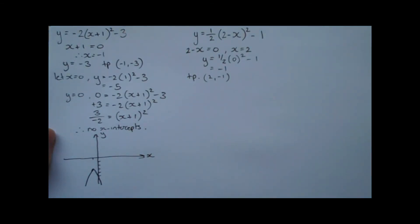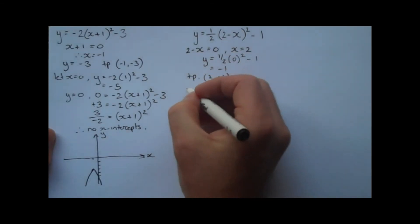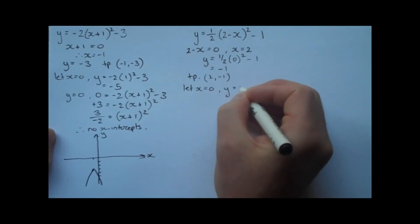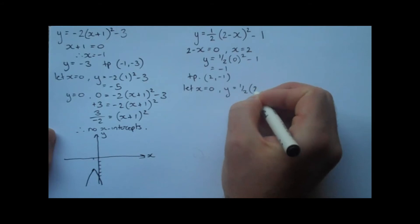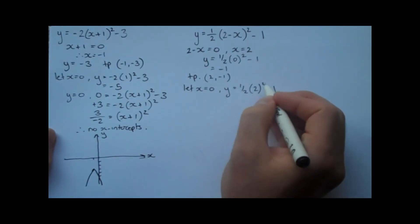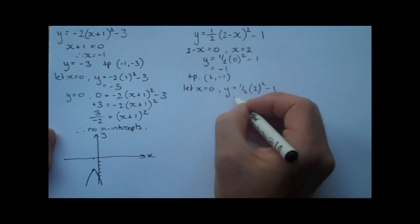So I suppose now we'd like to find the intercepts. So first of all, we will find the y-intercepts. So let x equal zero. If we let x equal zero, y becomes a half multiplied by two squared, take one. Two squared is four times a half is two. Take one is one.